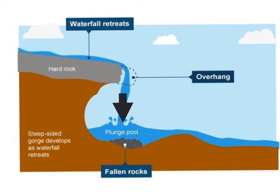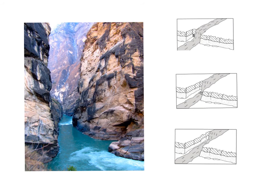This process doesn't stop there however. It repeats itself over and over again, meaning the waterfall retreats very slowly upstream. By retreating further and further upstream, this creates another landform — one which we refer to as a gorge. And the further back a waterfall retreats, the bigger a gorge will get.